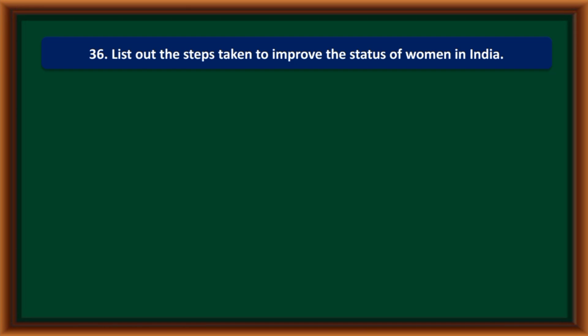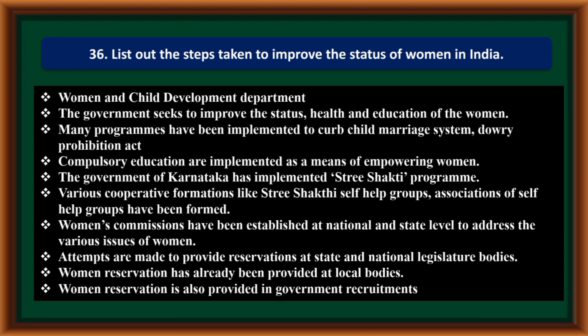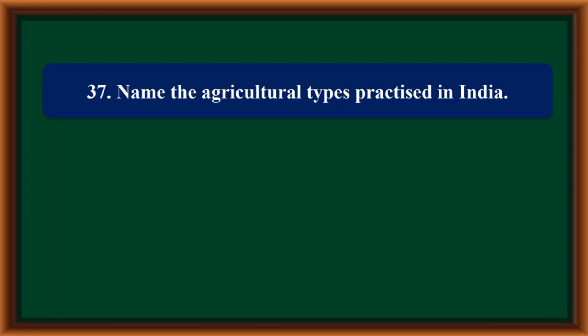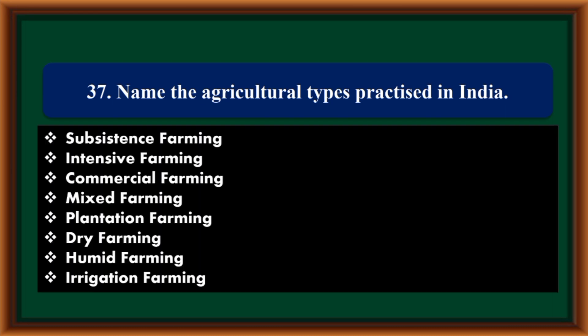List out the steps taken to improve the status of women in India. The Women and Child Development Department seeks to improve the status, health, and education of women. Programs implemented include the Dowry Prohibition Act, compulsory education, and measures to curb child marriage as means of empowering women. The Government of Karnataka has implemented the Stree Shakti program. Various cooperative formations like Stree Shakti self-help groups and associations have been formed. Women's commissions have been established at national and state levels to address women's issues. Attempts are made to provide reservation at state and national legislature bodies; women's reservation has already been provided at local bodies. Women's reservation is also provided in government recruitments.